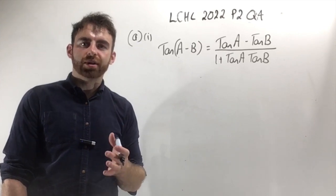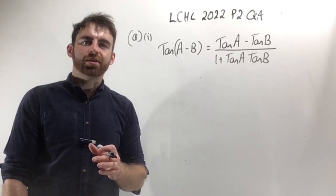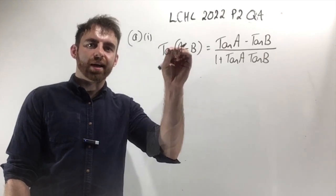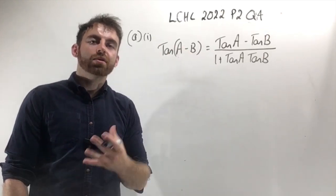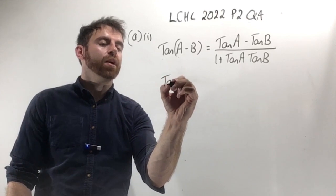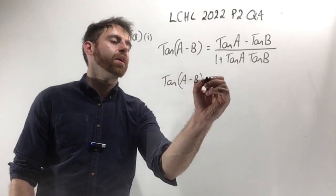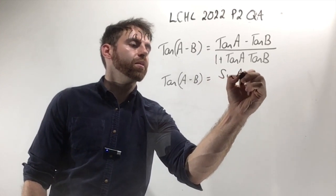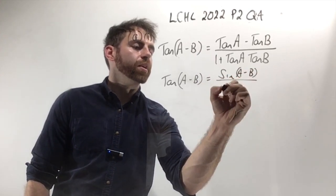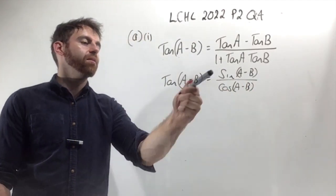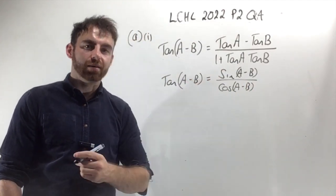The first thing you should do is go to page 13 in your maths tables. It tells you that the tan of an angle is equal to the sine of the angle over the cos of the angle. So I have tan A minus B, and based on the formula from page 13, that must be equal to sine of A minus B divided by cos of A minus B.